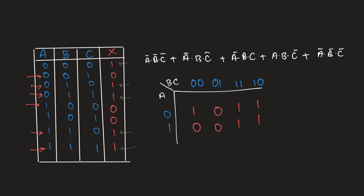Before we solve it, there's something really important to know: K-map tables wrap around. Imagine folding tin foil around a cylinder — one end touches the other end. Similarly, one end of the K-map table connects to the other end.